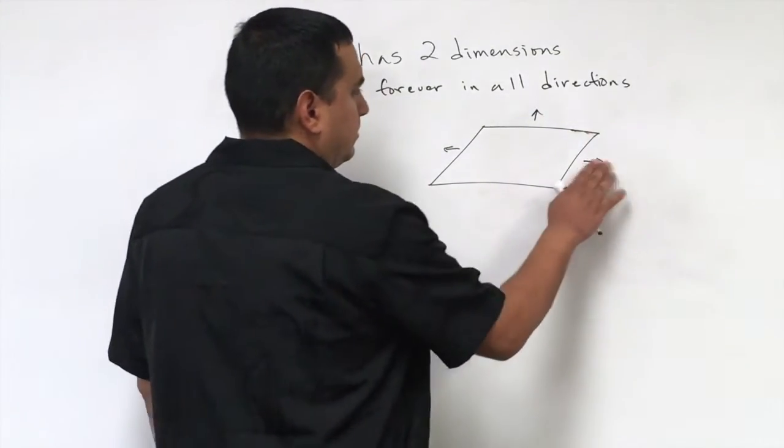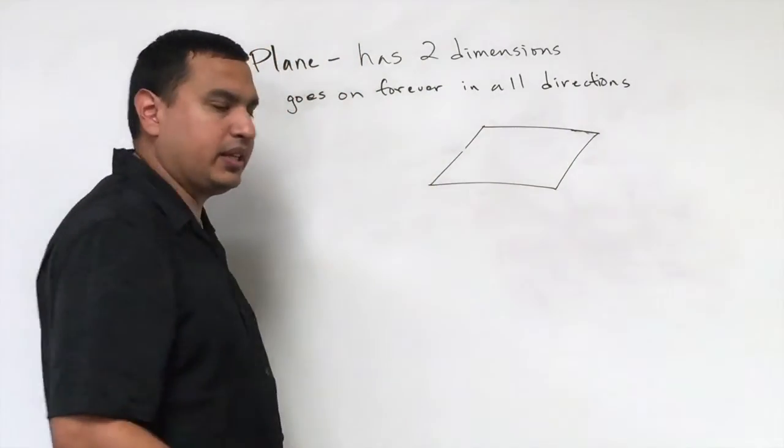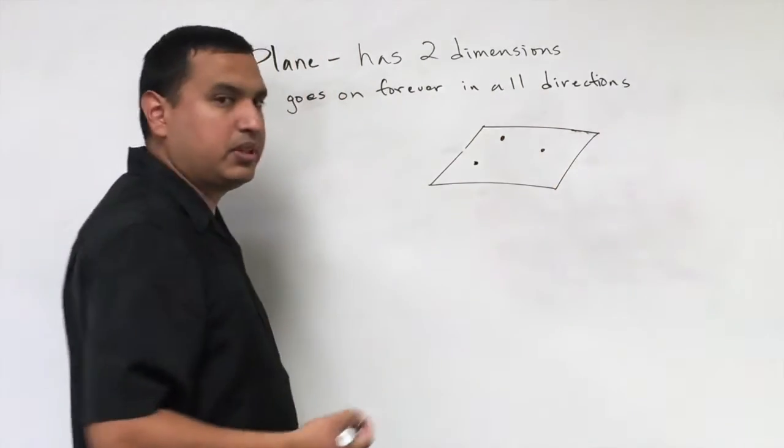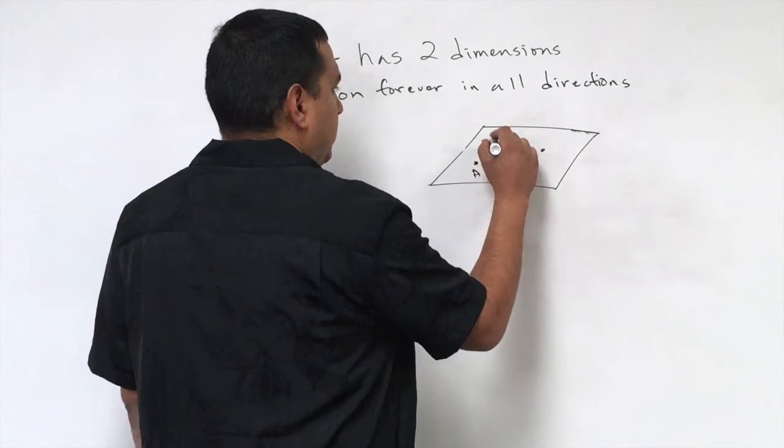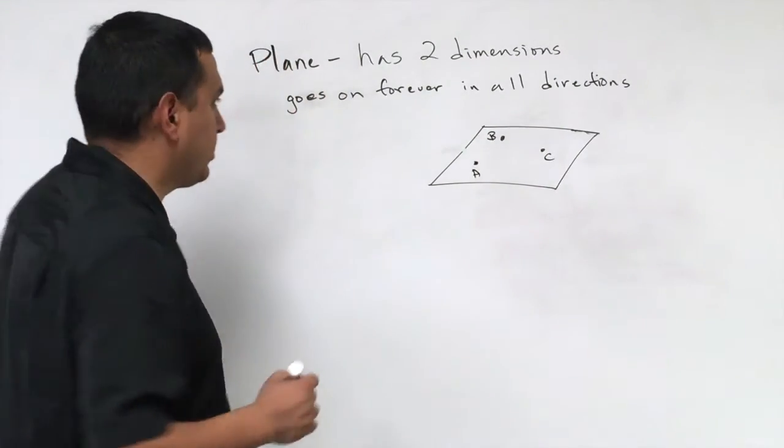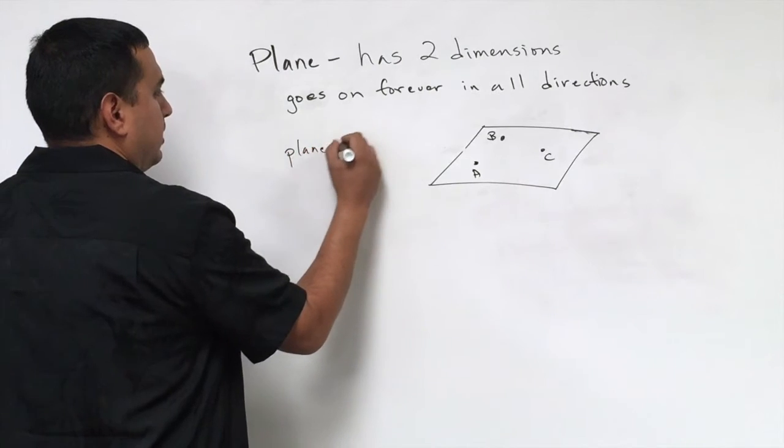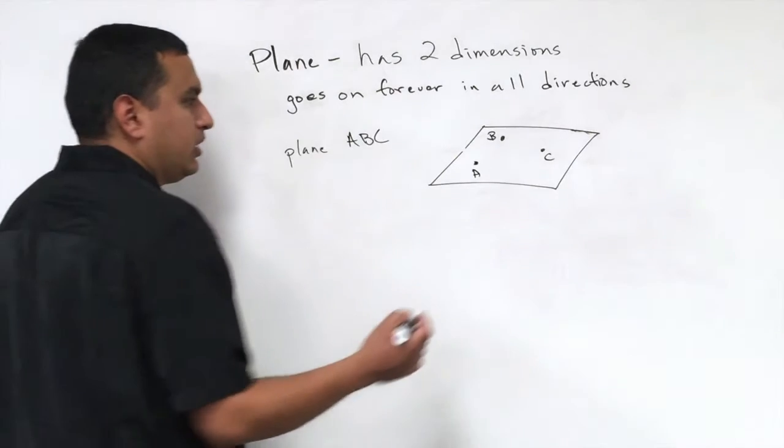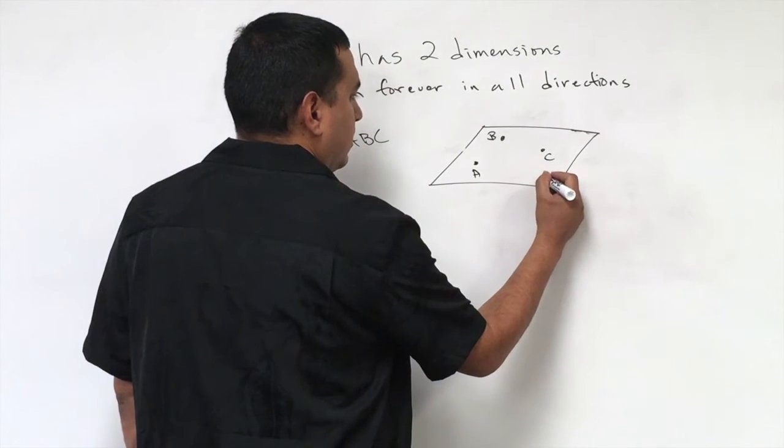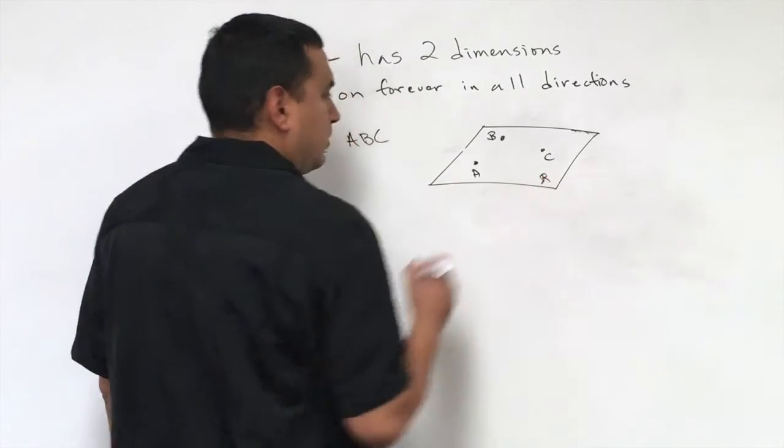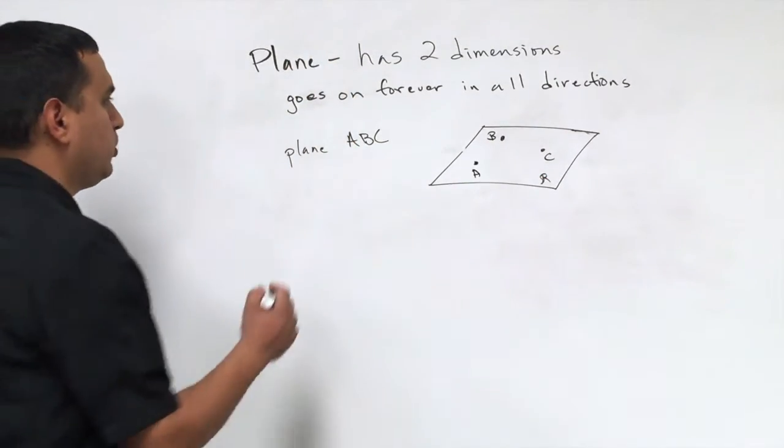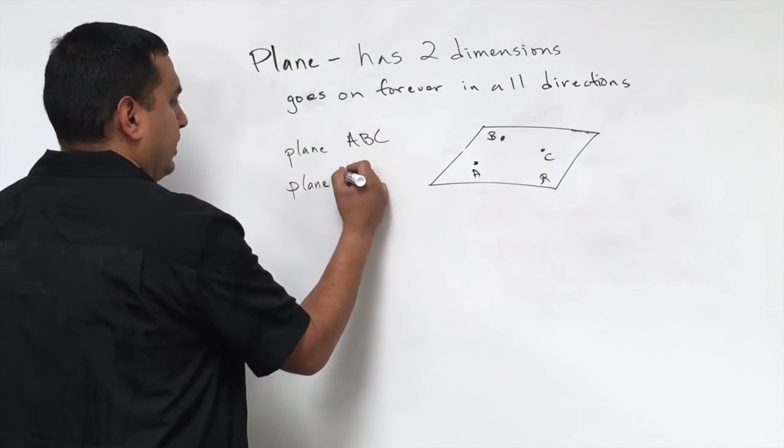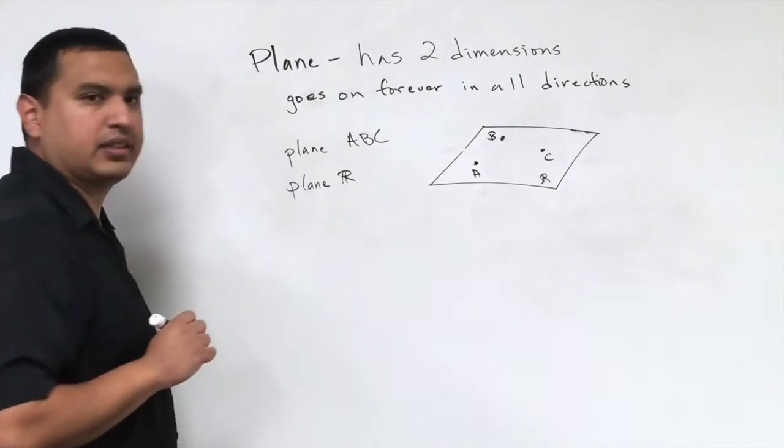Now, to name a plane, you have to pick three points that are not on the same line. And you would just name them A, B, C. And so I would call this plane A, B, C. The other way to name it is you'll see some other cursive letter here. I'll just do an R here. And so you would say, it doesn't have to be capitalized, it has to be in cursive or a script letter, and it'll be plane R, something like that.